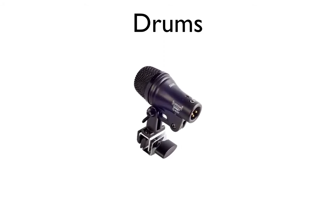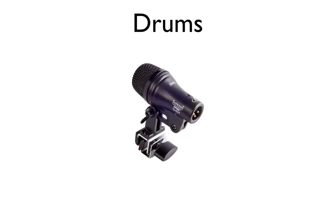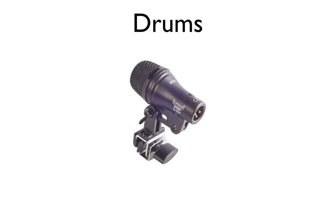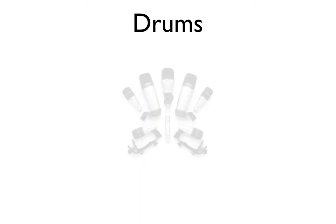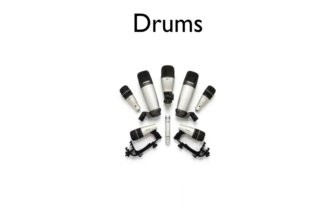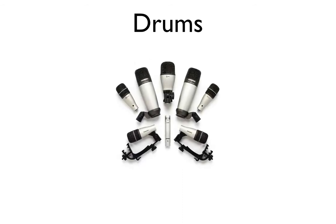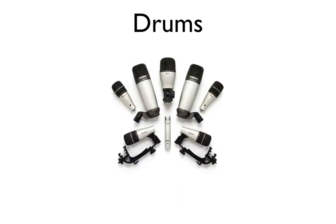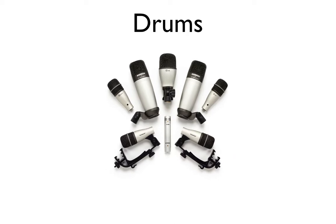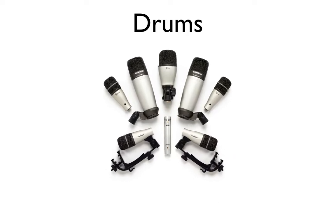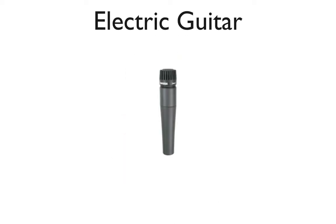For the snare or toms you could use condenser or dynamic mics. Micing drums actually requires a lot of experimentation, so as you set up your mics, have your drummer play moderately so that you can adjust the mics as you go along.